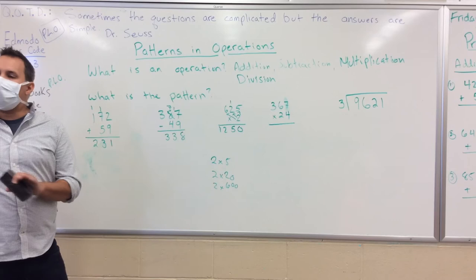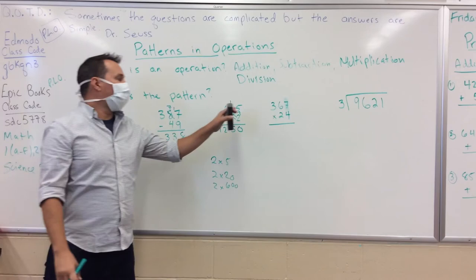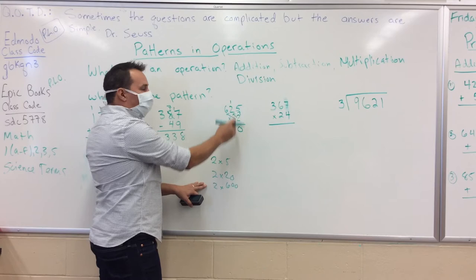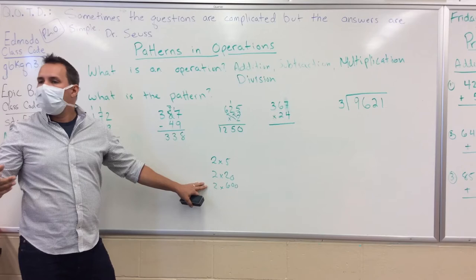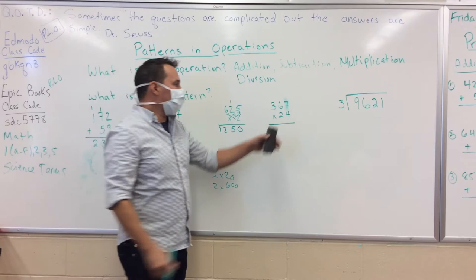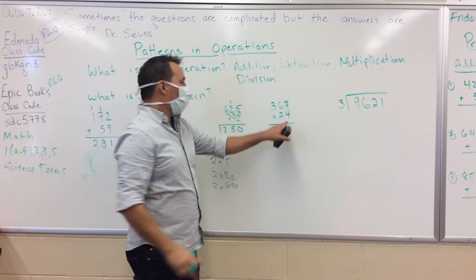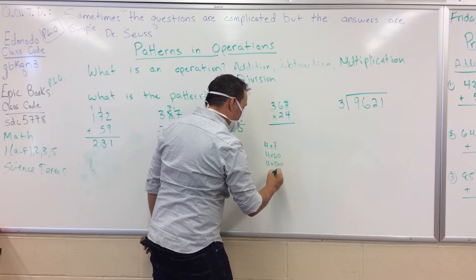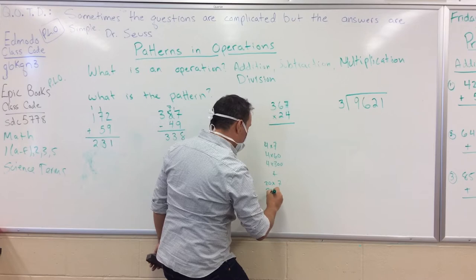We're going ones, tens, hundreds in multiplication too. Even though it looks like we're just multiplying by 1, when we write that second row it's really 2 times 20, which is 40 plus 10. It becomes more challenging with double-digit multiplication. The pattern breaks down as: 4 times 7, 4 times 60, 4 times 300, plus 20 times 7, 20 times 60, and 20 times 300.